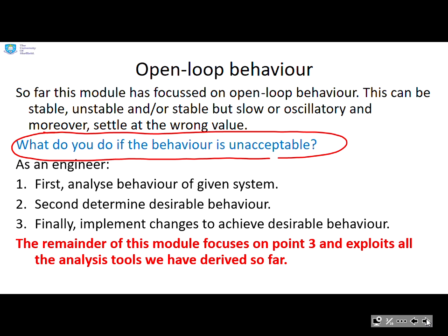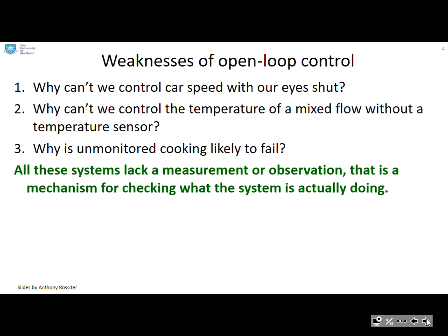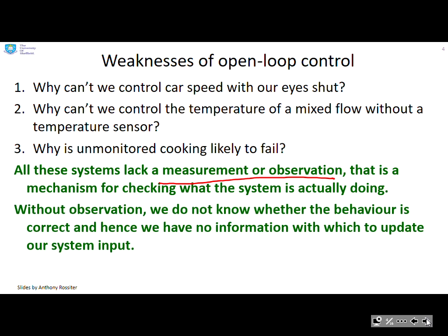Those tools include first and second order responses, Laplace transforms, inverse Laplace, ODEs, and so forth. Turning to the weaknesses of open loop control: why can't we control car speed with our eyes shut? Why can't we control the temperature of a mixed flow without a temperature sensor? Why is unmonitored cooking likely to fail? All these systems lack a measurement or observation — a mechanism for checking what the system is actually doing. Without observation we do not know whether the behaviour is correct, and hence we have no information with which to update our system input.